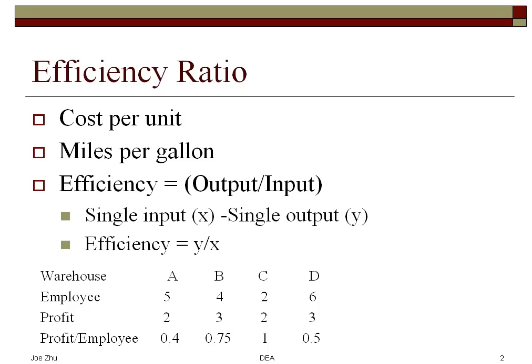Let's say you have four warehouses. You have the number of employees as an input and profit as an output. You can compute ratios, and the largest ratio — in this case, the one warehouse — is the most efficient one.